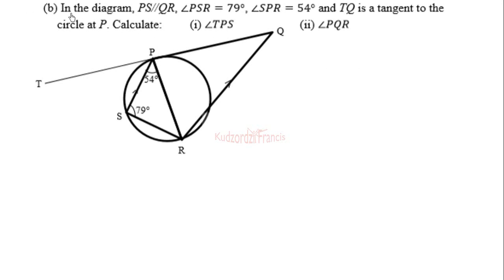This is the 2017 WAEC private exams question 5b. In the diagram, PS is parallel to QR, angle PSR is equal to 79 degrees, angle SPR is equal to 54 degrees, and TQ is a tangent to the circle at P. We need to calculate: part I, angle TPS, and part II, angle PQR. This is our diagram on circle theorems.